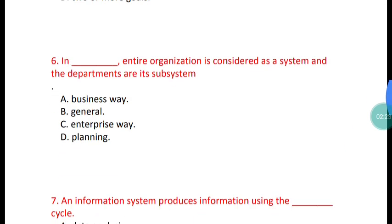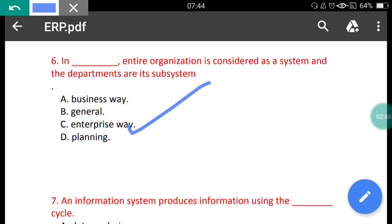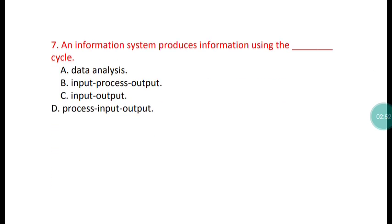Question 6: In which system is the entire organization considered as a system and the departments are its subsystems? Option C is the correct answer. Question 7: An information system produces information using which cycle? The correct answer is option B — input, process, output cycle.